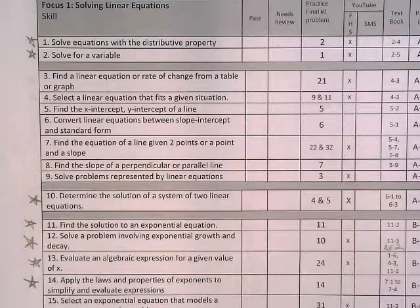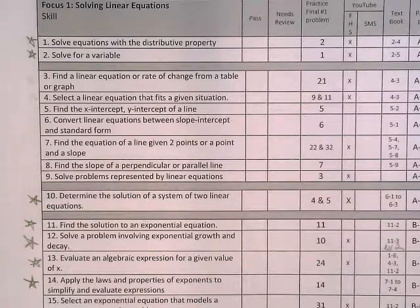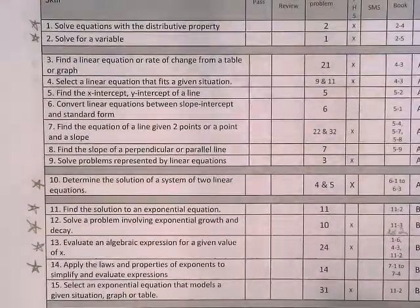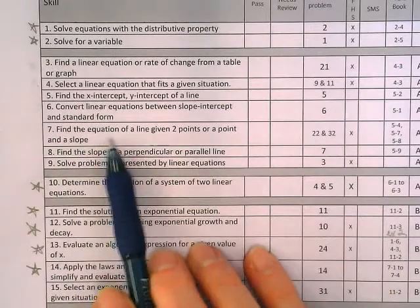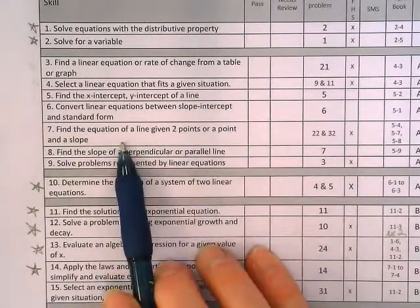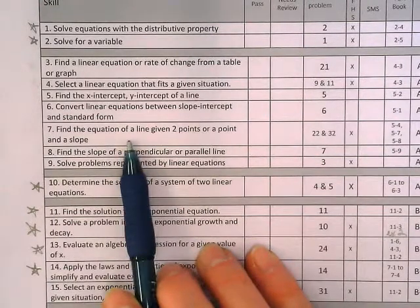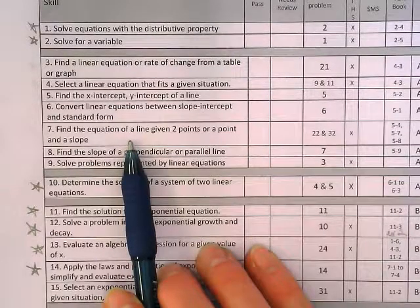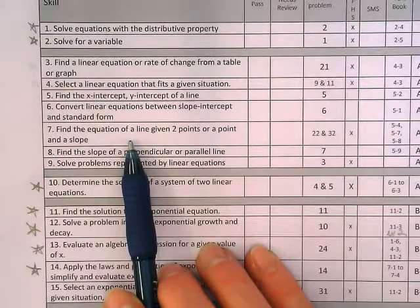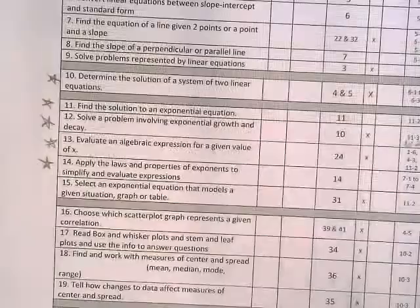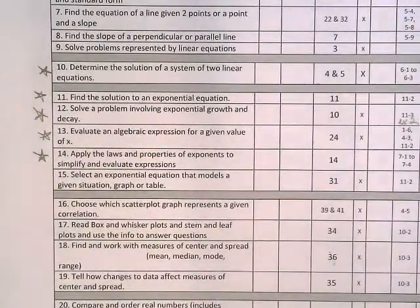One and two are on there. But then there's nothing in this section that is actually on the final. For instance, look at number seven. Find the equation of a line given two points or a point and a slope. I used the slope formula to find slope, but I never had to turn it into an equation. There was no graph that I had to look at it and decide what the equation was for it. I actually thought the final was kind of easy. And not just because I teach this.